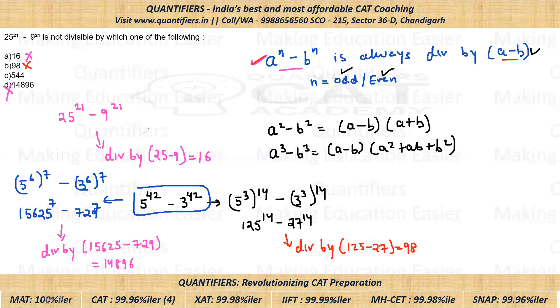Okay students, so we are left with only one option, that is 544. So that means this number is not divisible by 544, and that will be our answer. So very important concept. I hope this is clear to everyone. If you liked the video, then please do like it, do share it with your friends, and do subscribe our channel. It will motivate us to give you better content. Okay, thank you everyone.